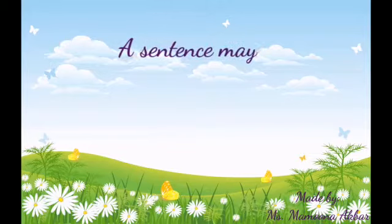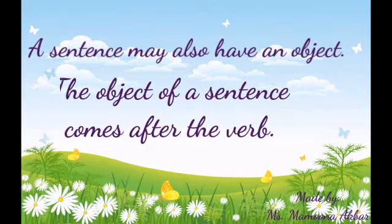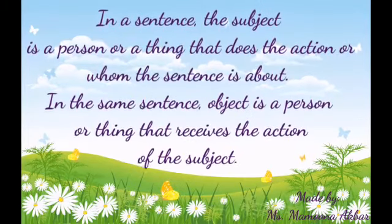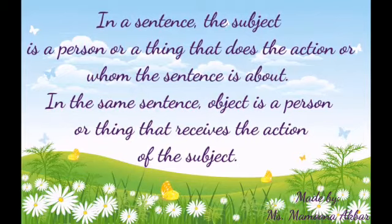Our sentence may also have an object. The object of a sentence comes after the verb. In a sentence, the subject is a person or a thing that does the action, or whom the sentence is about. In the same sentence, the object is a person or thing that receives the action of the subject.